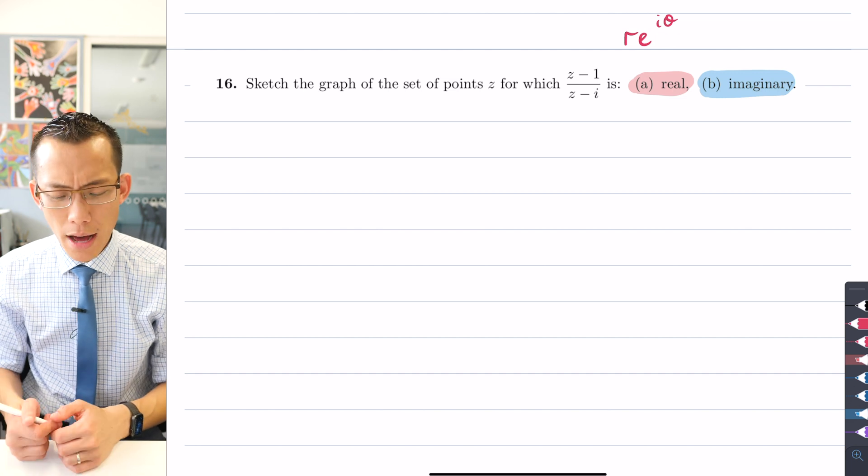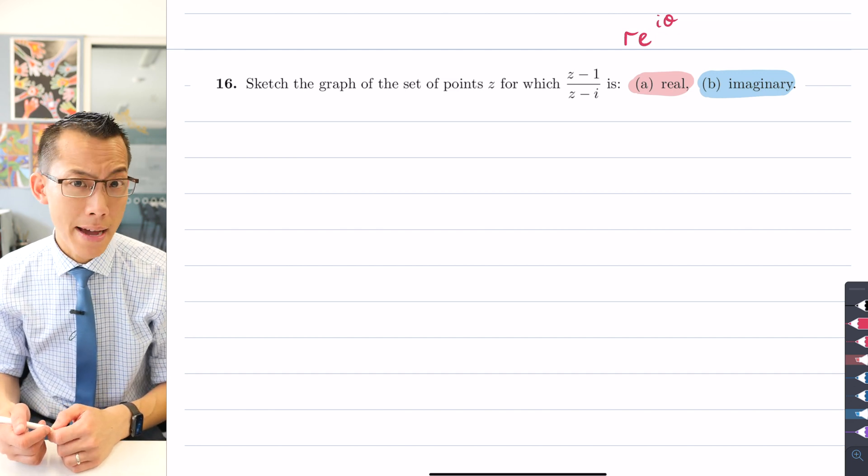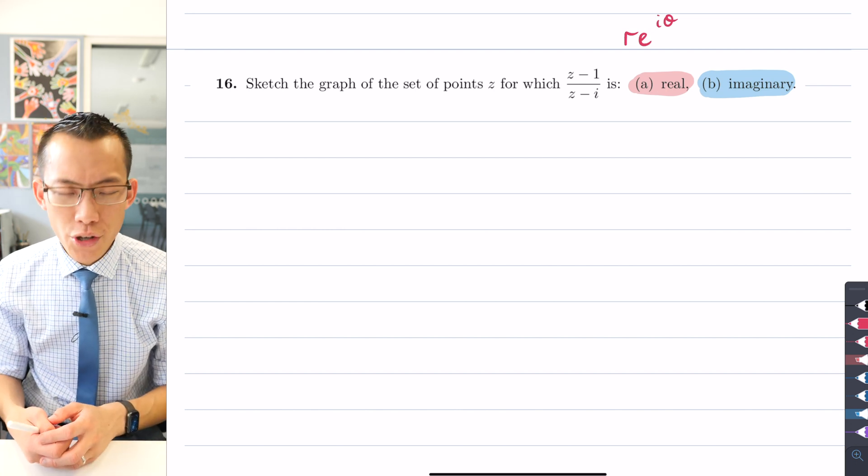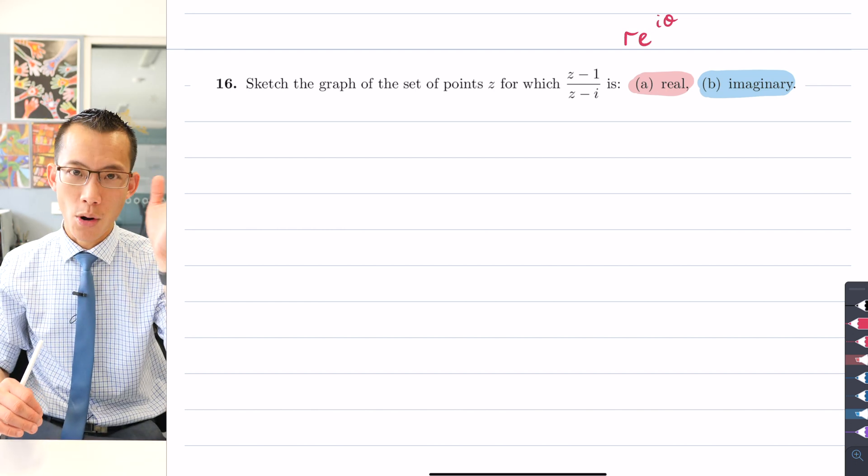You can see for example when we take the exponential form of a complex number, it's a single thing, r*e^(i*theta). Which part of this is the real part and which part is the imaginary part? The answer is it's kind of all intertwined.